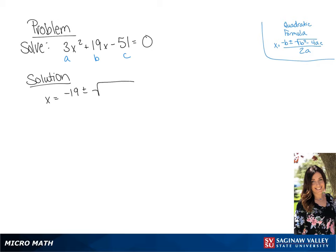So we will get x equals negative 19 plus or minus 361 plus 612 all over 6. If we simplify this, we get an answer of negative 19 plus or minus the square root of 973 all over 6.